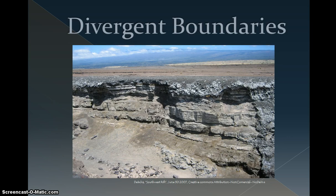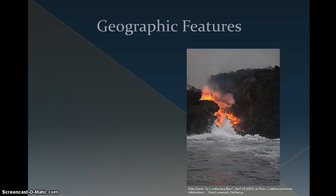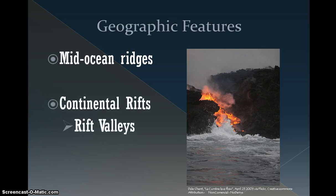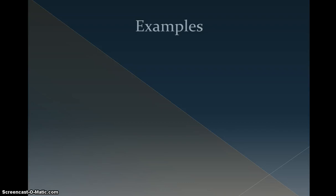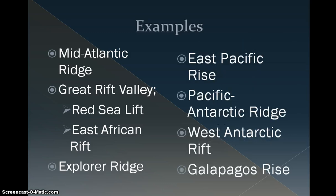The last types of boundaries to discuss are divergent boundaries. Divergent boundaries occur when two plates move away from one another, creating a gap between the two plates. As this happens, the space in between is filled with molten lava that eventually hardens. The geographic features usually associated with divergent boundaries are mid-ocean ridges, continental rifts which create rift valleys, and volcanoes created by the rising of molten lava, as shown in the photo of the April 2009 eruption of La Cumbre volcano. Examples include the Mid-Atlantic Ridge, the Great Rift Valley, which is responsible for the Red Sea Rift and the East African Rift, Explorer Ridge, the East Pacific Rise, the Pacific Antarctic Ridge, the West Antarctic Rift, and the Galapagos Rise.